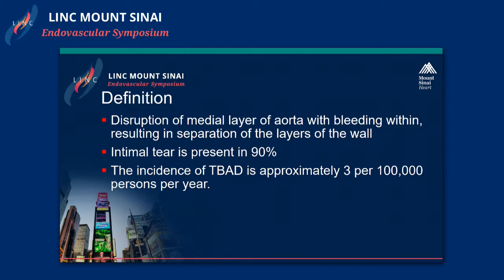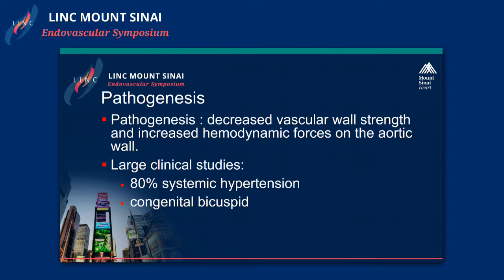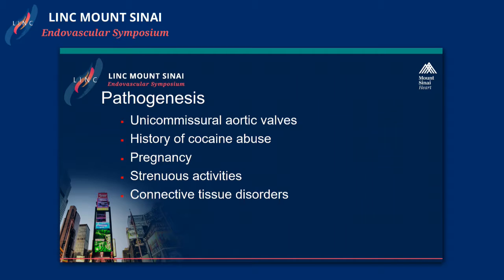The incidence of type B aortic dissections is three per thousand person per year. The pathogenesis is a decrease in wall strength and increase in hemodynamic forces on the aortic wall. Large clinical studies have shown that 80% of patients who develop these dissections have systemic hypertension. The remaining reasons are essentially congenital bicuspid aortic valve, aortic valve degeneration, along with cocaine use, pregnancy, strenuous activity, and connective tissue disorders.